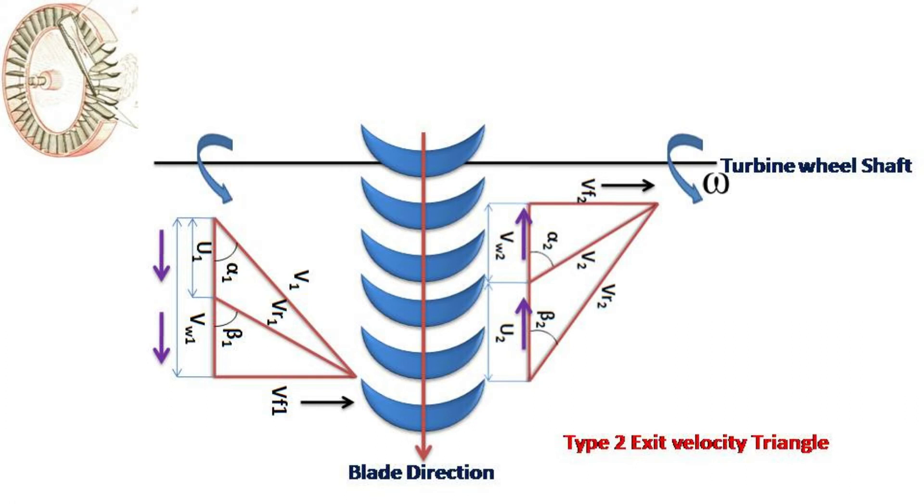Whirl velocities vw1 and vw2 both are responsible for the blade movement and hence both will be added in case of turbines even though they are in the opposite direction. Addition of vw1 and vw2 is called as the total whirling velocity.